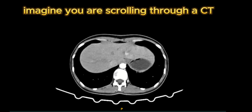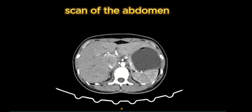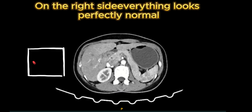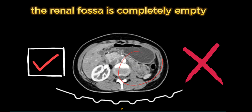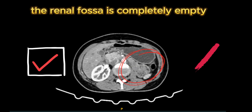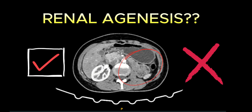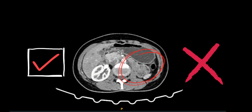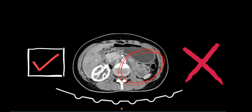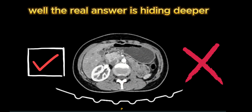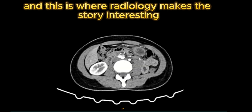Imagine you are scrolling through a CT scan of the abdomen. On the right side, everything looks perfectly normal. But when you look at the left side, the renal fossa is completely empty. There is no kidney at all. So is this renal agenesis or did the patient lose a kidney? Well, the real answer is heading deeper, and this is where Radiology makes the story interesting.